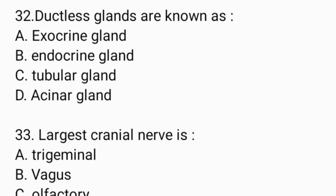Next question: Ductless glands are known as — Option A: exocrine gland. Option B: endocrine gland. Option C: tubular gland. Option D: acinar gland. And the answer is Option B, endocrine gland.